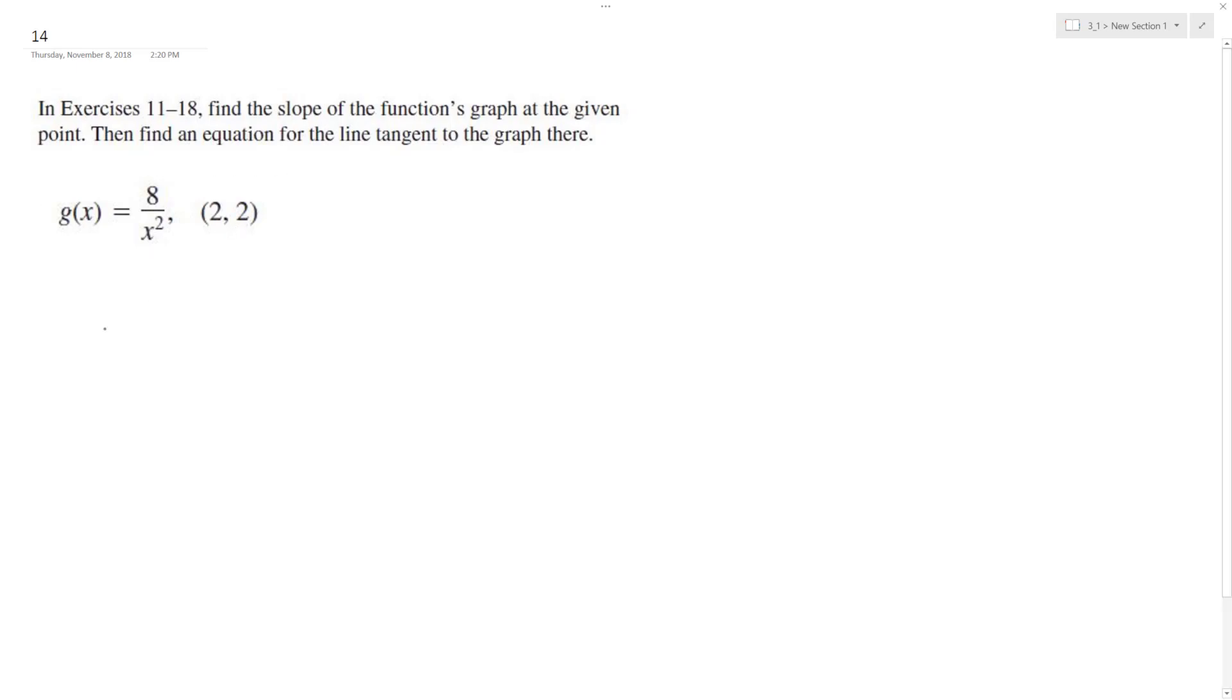So to find that, I'm going to do g prime of x is equal to... I'm going to use 8x raised to the negative 2. So pull down the negative 2, negative 2 times the 8, and then subtract 1. So finally we end up with negative 16x raised to the negative 3.